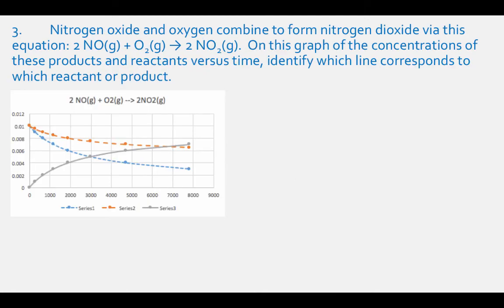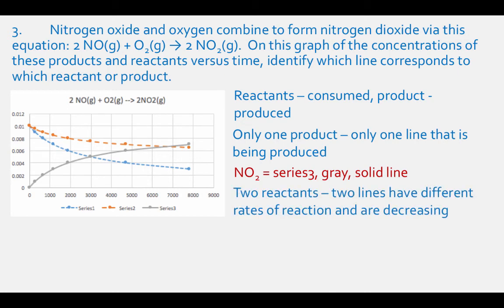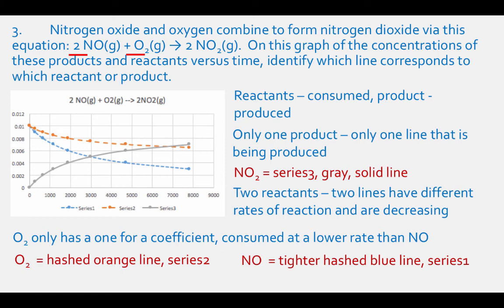Problem 3: Nitrogen oxide and oxygen combine to form nitrogen dioxide via 2NO gas plus O2 gas results in 2NO2 gas. On a graph of concentrations of these products and reactants versus time, identify which line corresponds to which reactant or product. You know that the reactants will be consumed and the product will be produced. There is only one product, and only one line — the solid gray line (Series 3) — that is being produced. Therefore, the solid gray Series 3 line corresponds to NO2. The two lines showing reactants consumed have different rates. Since O2 has a coefficient of 1, it is consumed at a lower rate than NO, so it is the hashed orange line (Series 2). The NO is the tighter hashed blue line, Series 1.